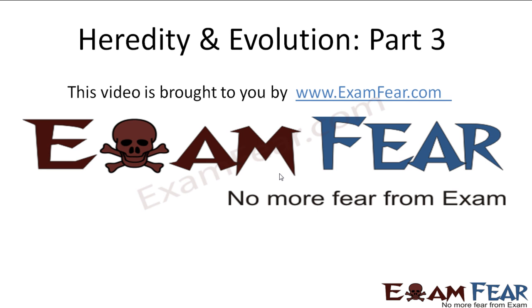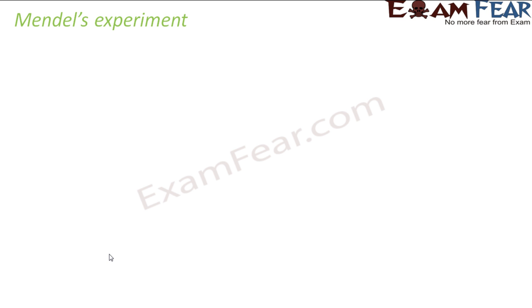Hello friends, this video on Heredity and Evolution part 3 is brought to you by examfear.com — no more fear from exam. Now, Mendel's experiment — what he actually did. We all know that in sexual reproduction, there are two parents involved and both of these parents contribute equally to the traits seen in the child. For example, in human beings, the father and the mother both will contribute something to the child, and that is why the child will have some features similar to his father and some features similar to his mother.